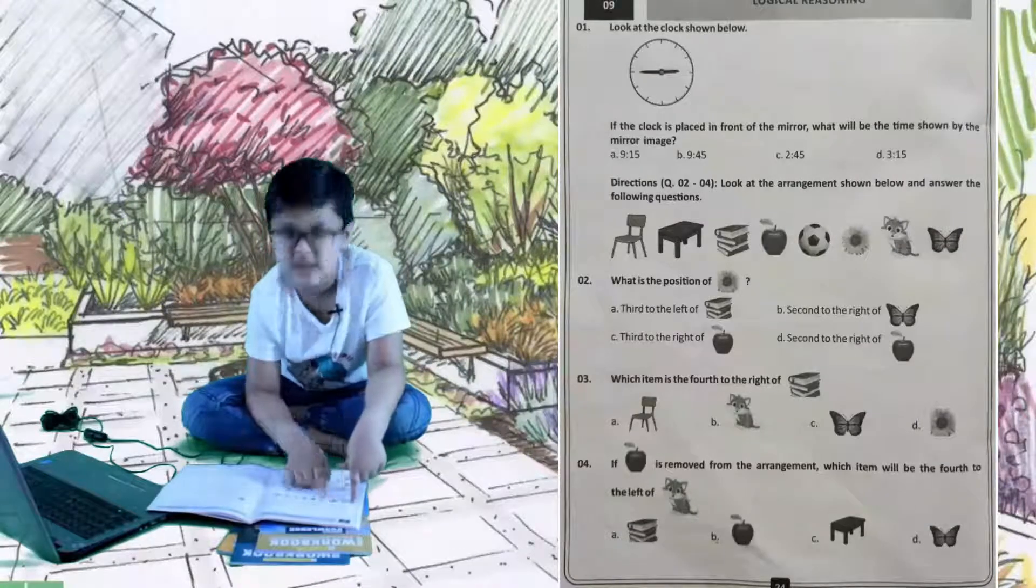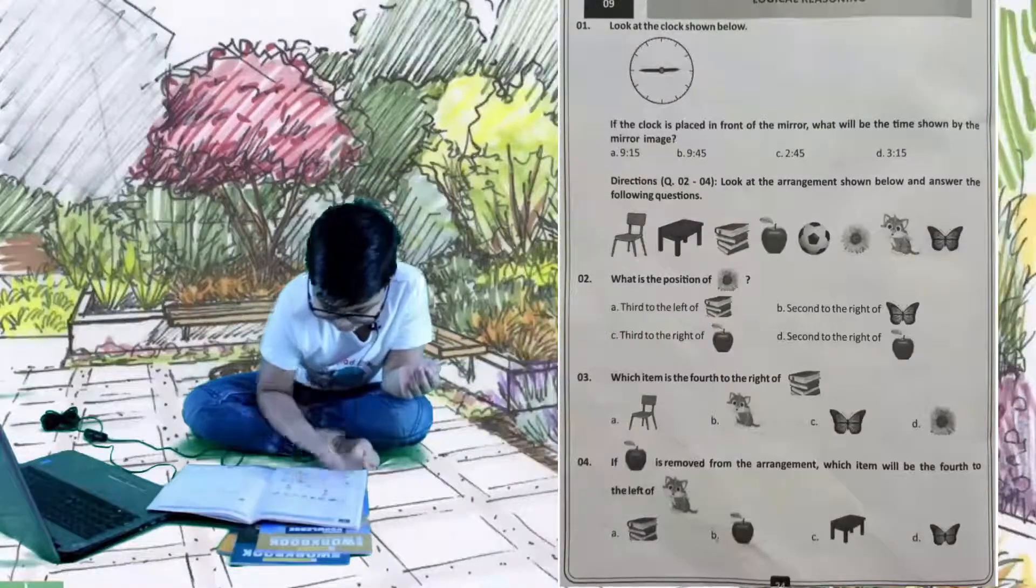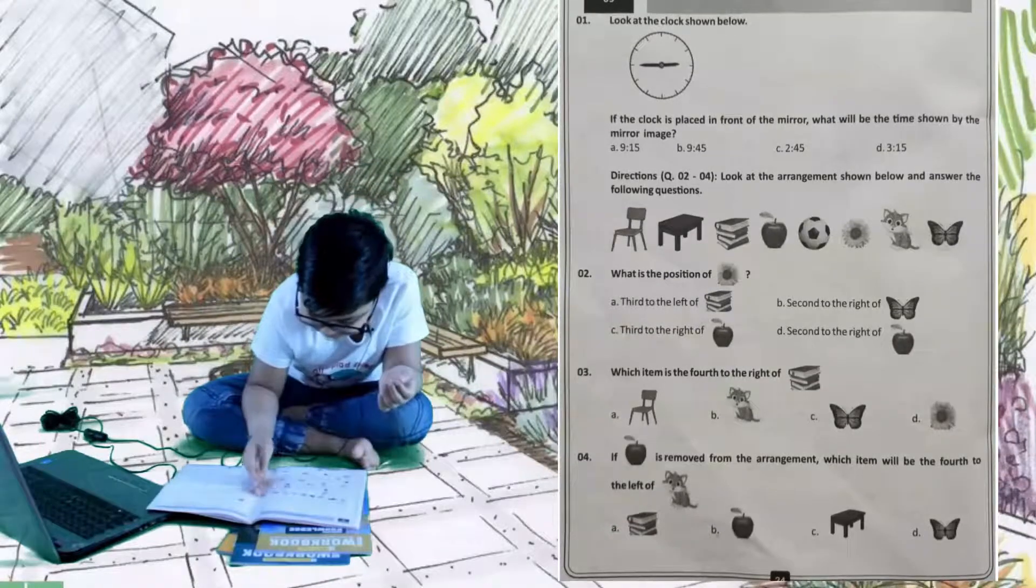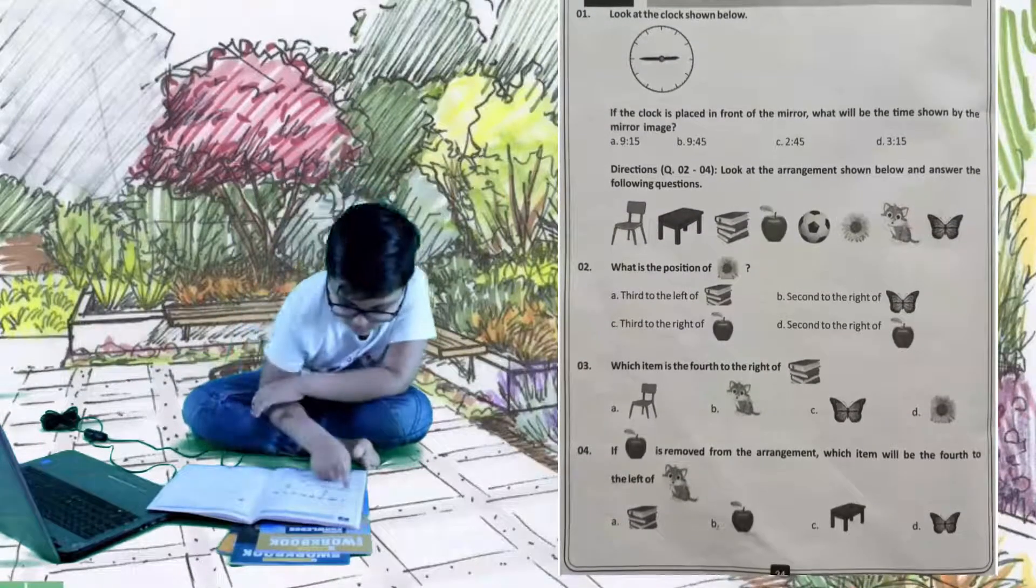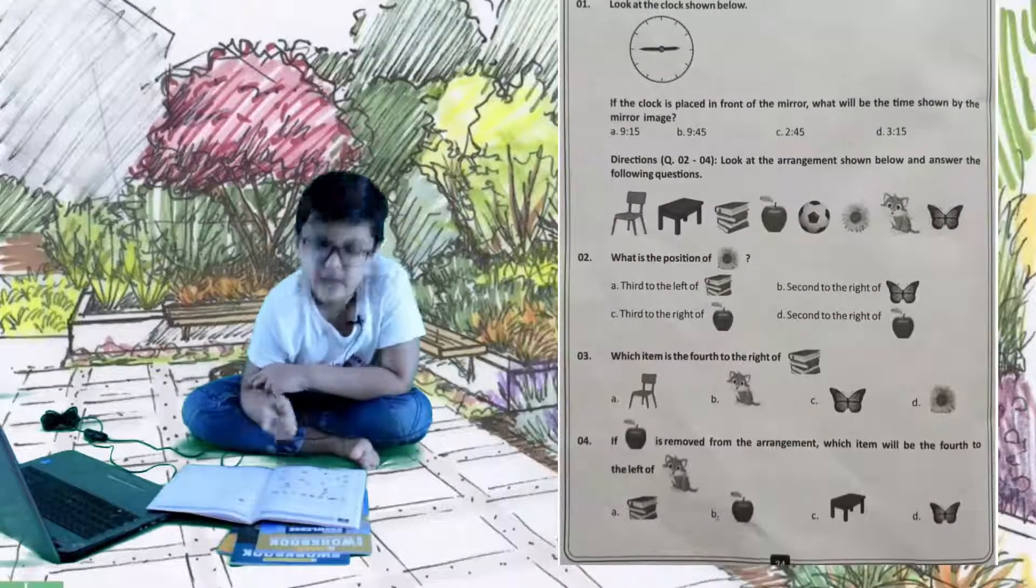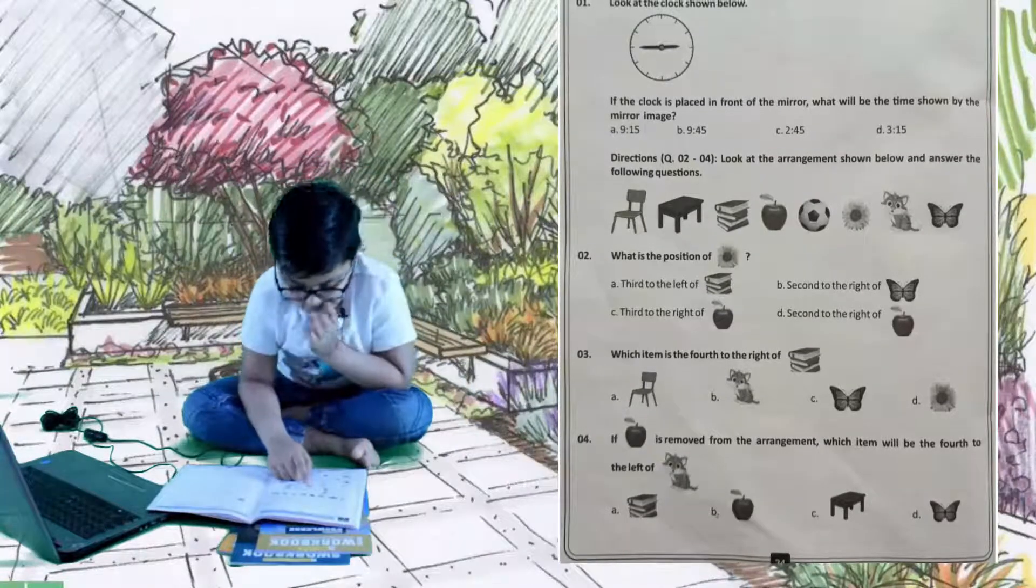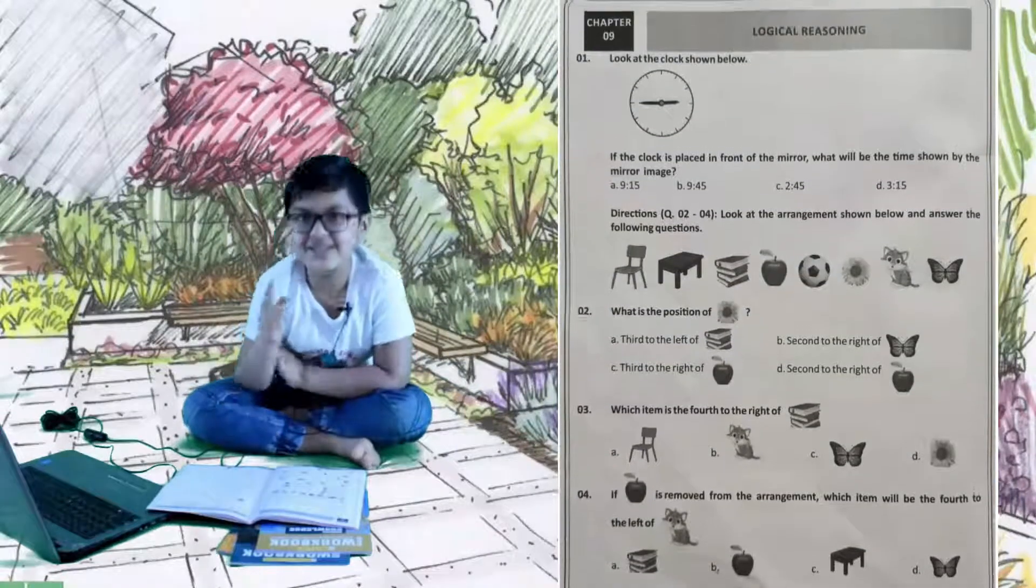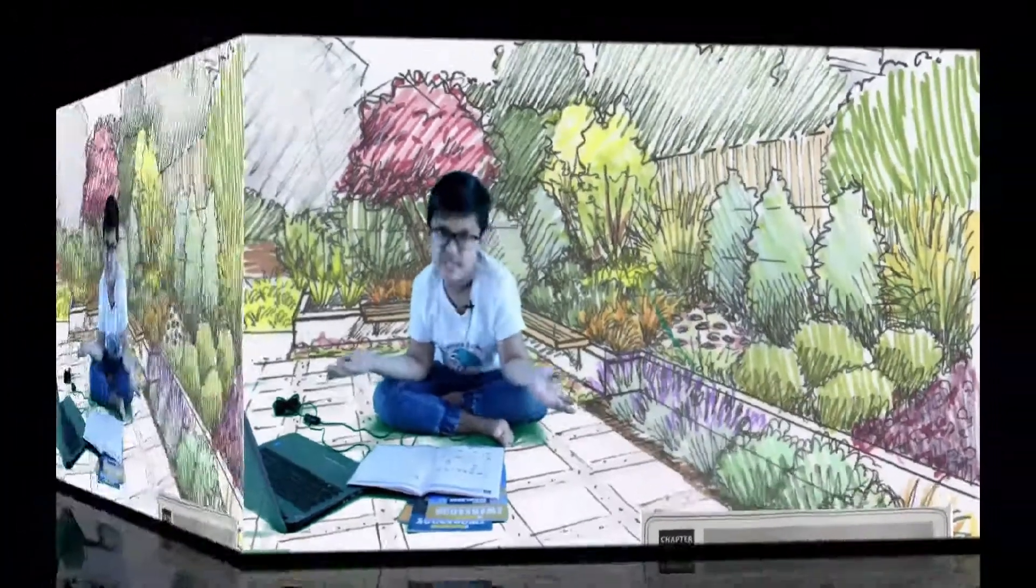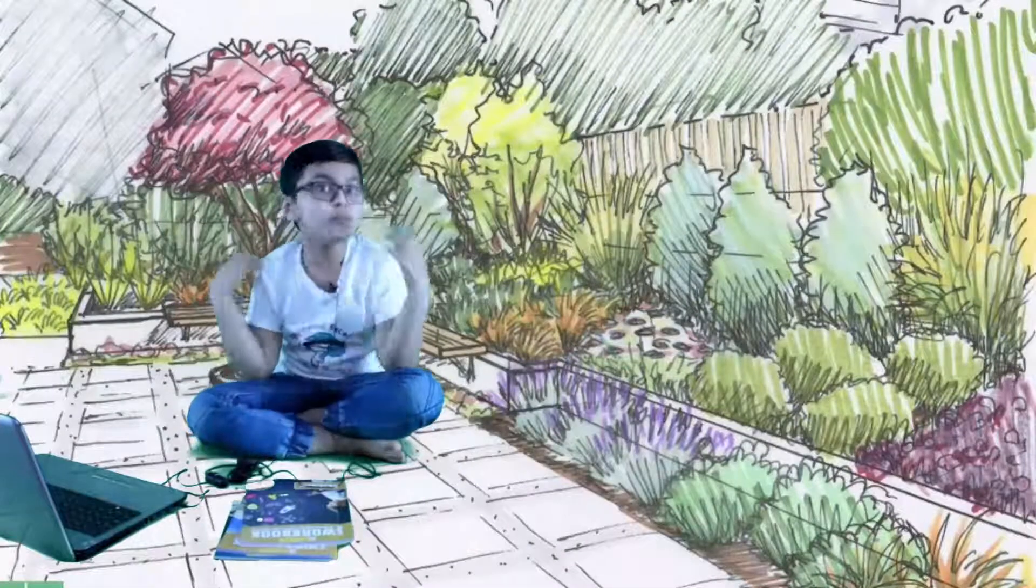First option is third to the left of the books, but there are only two to the left. B is second to the right of the butterfly, there is nothing in the right. C is third to the right of apple, so first, second, third is the cat, not the sunflower. D is second to the right of apple. This is the right answer because it's second to the apple, obviously.